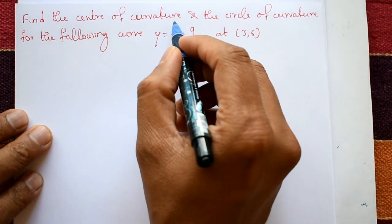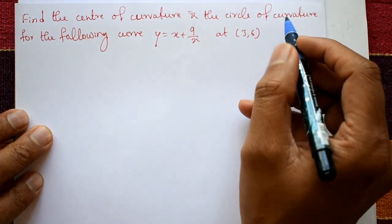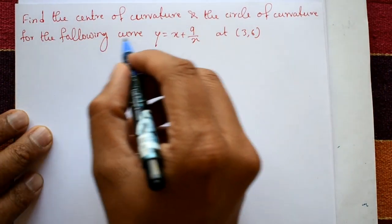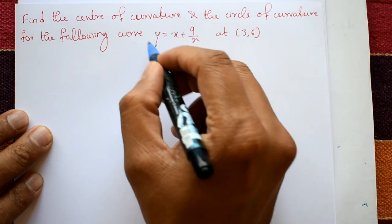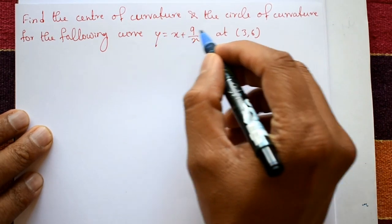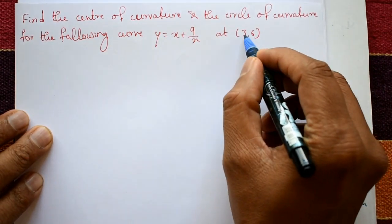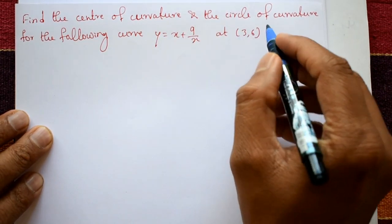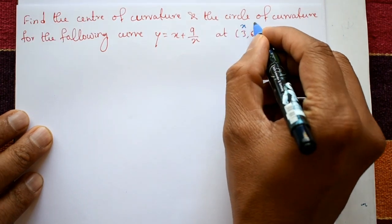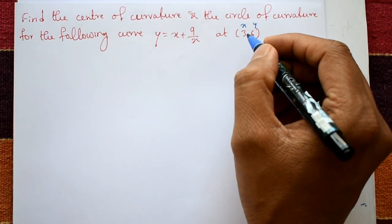Find the center of curvature and the circle of curvature for the following curve. The curve is given as y = x + 9/x at the point (3, 6), where 3 is the x-value and 6 is the y-value.